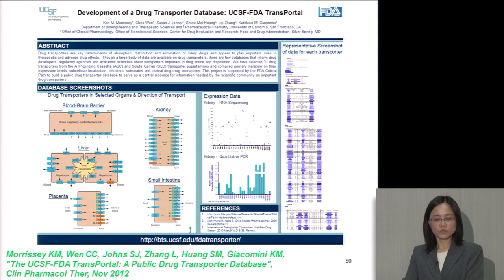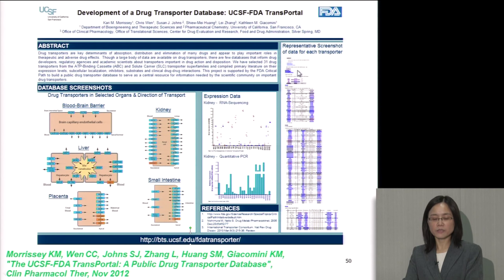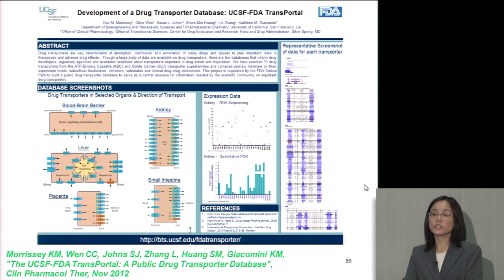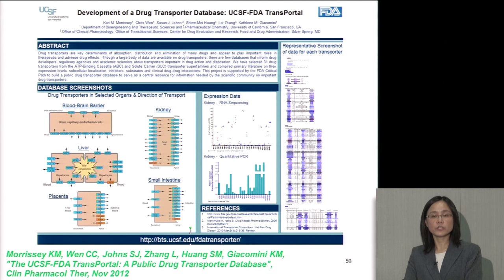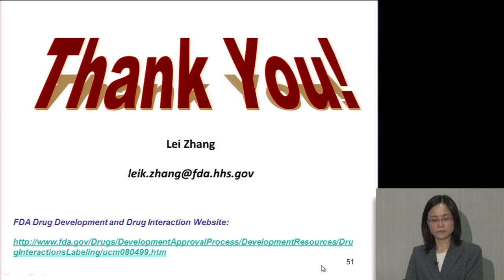We developed a drug transporter database called UCSF-FDA TransPortal, sponsored by the FDA Critical Path. This database includes both expression data and clinical DDI information, including in vitro parameters and in vivo DDI data, and is publicly available. We continue to update this database to assist drug development and regulatory review. We acknowledge many people in the FDA including Xiaomei Huang, members of the OCP Transporter Scientific Interest Group, review staff and fellows, and external experts through ITC, other regulatory agencies, the Innovation and Quality Consortium, and academic collaborators under CERSI and other mechanisms. Thank you for your attention.